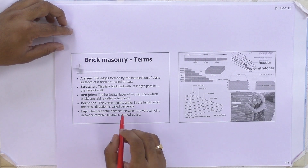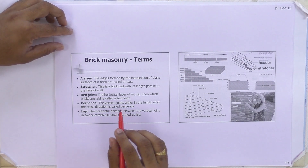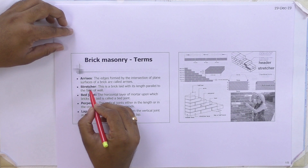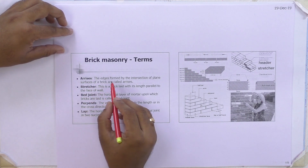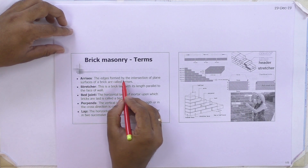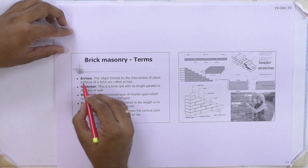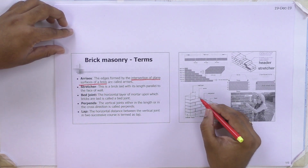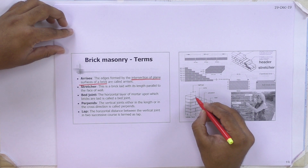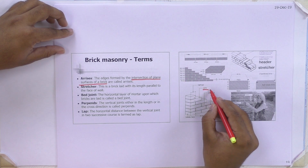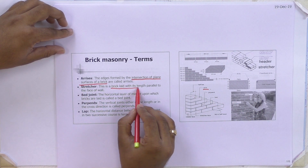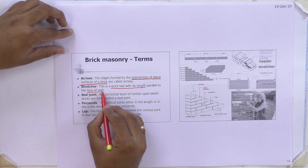In brick masonry, there are different terms we use. The first one is arises — the edge formed by the intersection of plane surfaces of a brick is called arises. Next one is stretcher — this is a brick laid with its length parallel to the face of the wall.